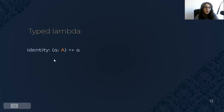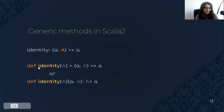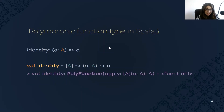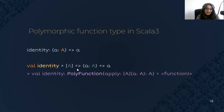Now, let's see how we can define typed lambda expressions. In Scala 2, we have generic methods, but we cannot define generic functions. In Scala 3, there is a new type called PolyFunction that allows us to use a new syntax to define polymorphic functions. We specify the type parameters here. So the things we can do using methods, we can now do them using functions in Scala 3.